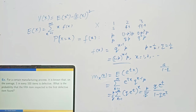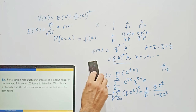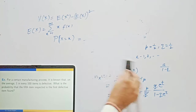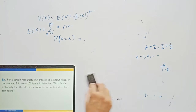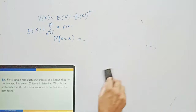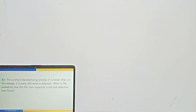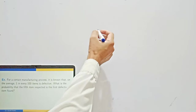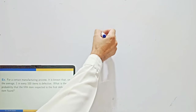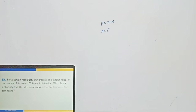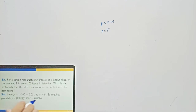Next example: For a certain manufacturing process it is known that on average 1 in 100 items is defective. What is the probability that the 5th item inspected is the first defective item found? Here the first success is finding a defective item. With x = 5 and P = 0.01, using the geometric distribution formula gives P × Q^4 = 0.0096.